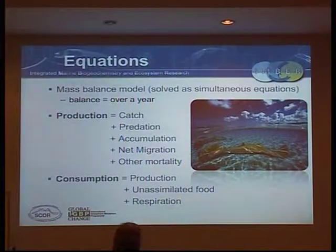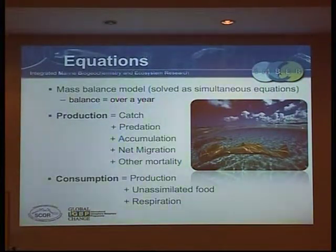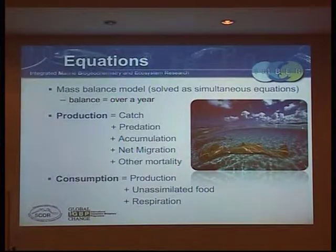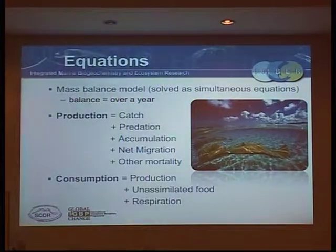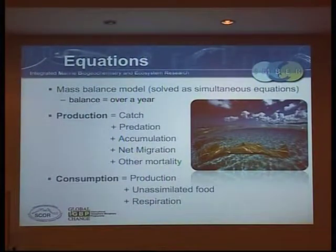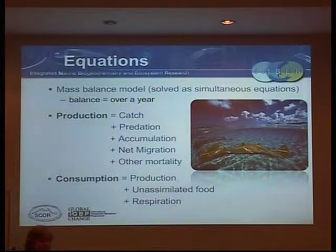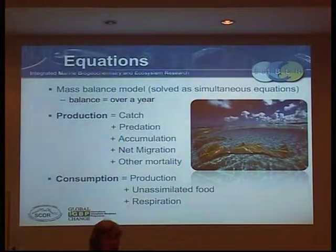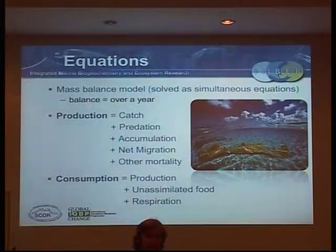In there he had production - which is the amount of biomass produced - equals how much we catch, how much of it gets eaten, how much of it is just accumulating through time, so if there's an invading species coming into the system it's kind of on its own trajectory, how much of it moves into or out of the system in a year, and then other sources of mortality he can't capture. It was never supposed to be an equilibrium model. It's just supposed to balance over the course of a year.